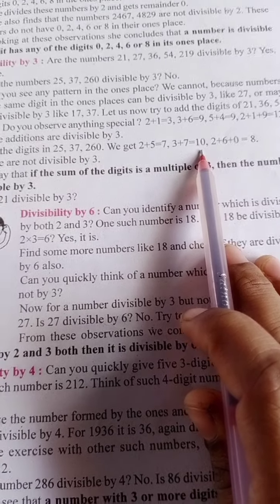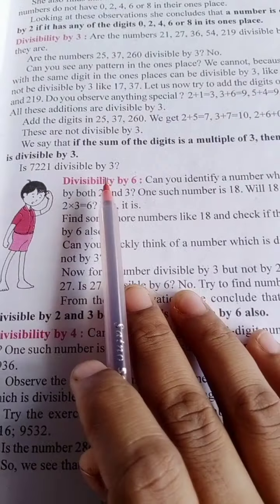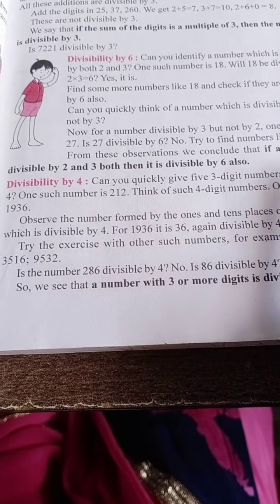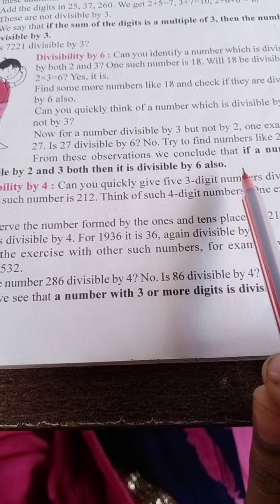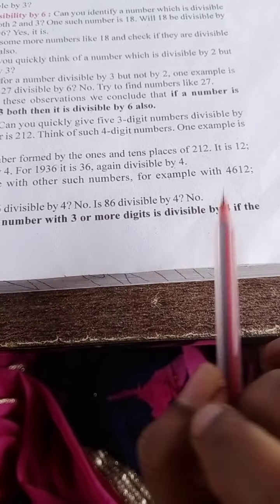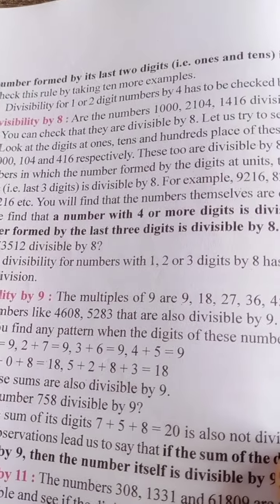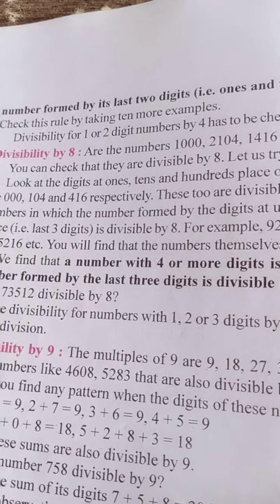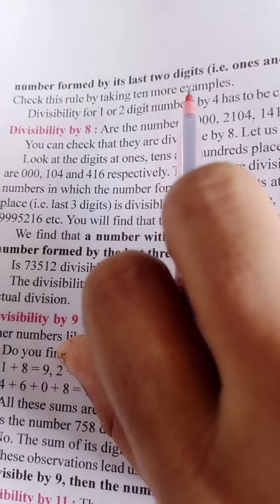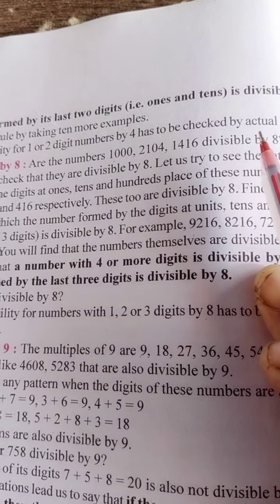Divisibility by 6: if a number is divisible by both 2 and 3, then it is divisible by 6 also. Divisibility by 4: a number with 3 or more digits is divisible by 4 if the number formed by its last 2 digits — that is, the ones and tens place — is divisible by 4.